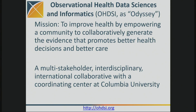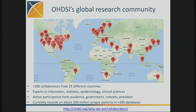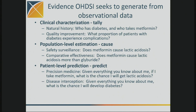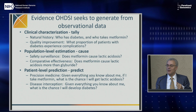Odyssey is an international collaboration to generate evidence. It has participants from around the world, over 200 collaborators, 25 countries, and half a billion unique patients in its federated database. It generates three kinds of evidence: it tallies things, it does comparative effectiveness research, and it does prediction. I'm going to focus on the third one.